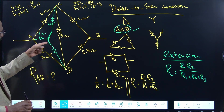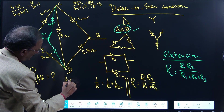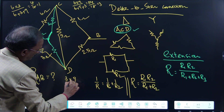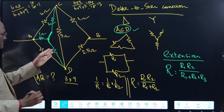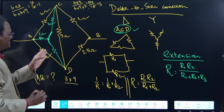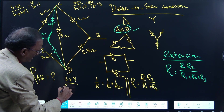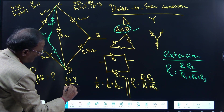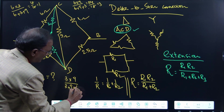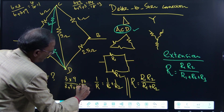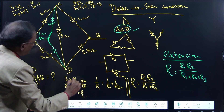At junction D, the two adjacent resistors are 3 ohms and 9 ohms (R1 and R2), and 6 ohms is R3. So R = 3×9 / (3 + 9 + 6) = 27/18 = 3/2 = 1.5 ohms.